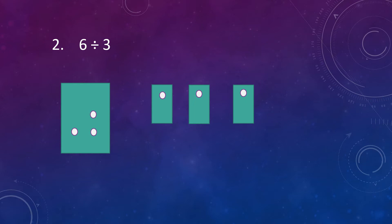Put the dots equally in each box. Now we are left with three dots to divide. Again, put a dot in each box — take one dot and put it in the first box, take one dot and put it in the second box, take one dot and put it in the third box. Now there are 0 dots left. All the dots have been divided and each box has 2 dots.